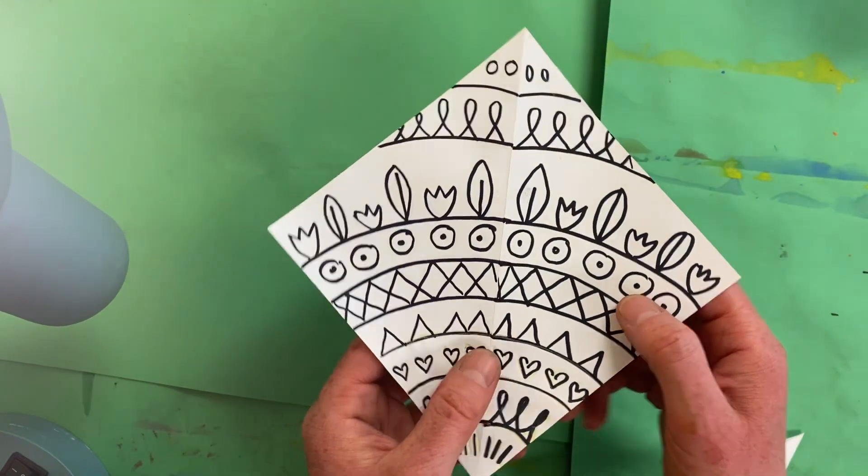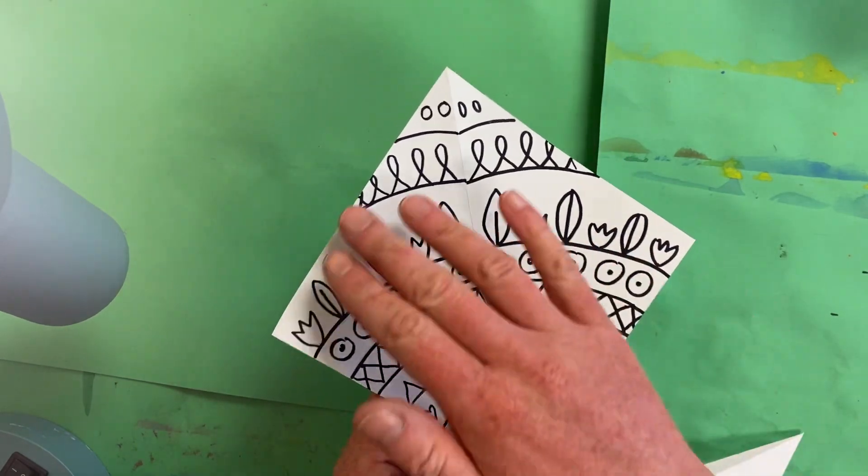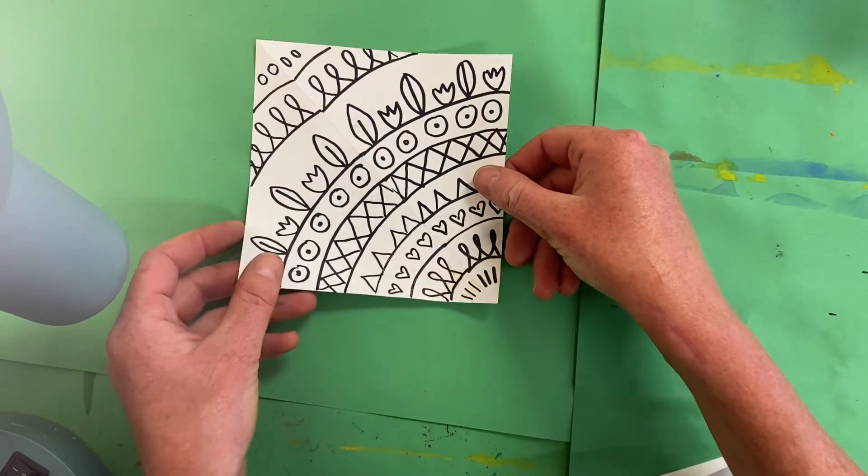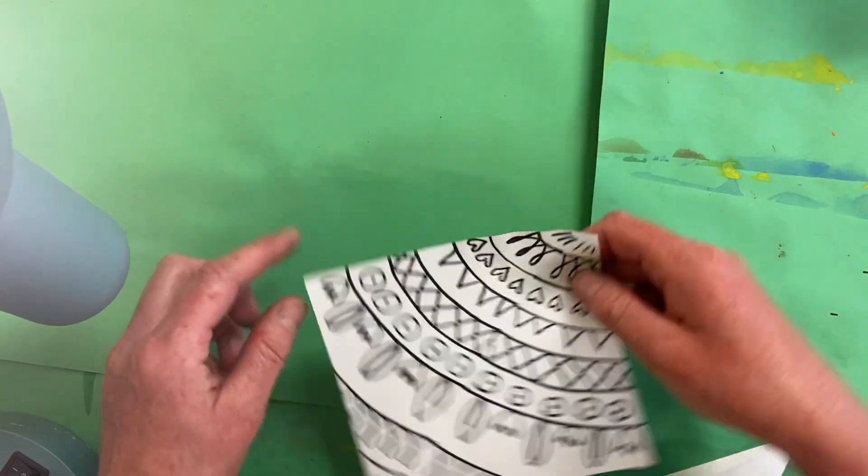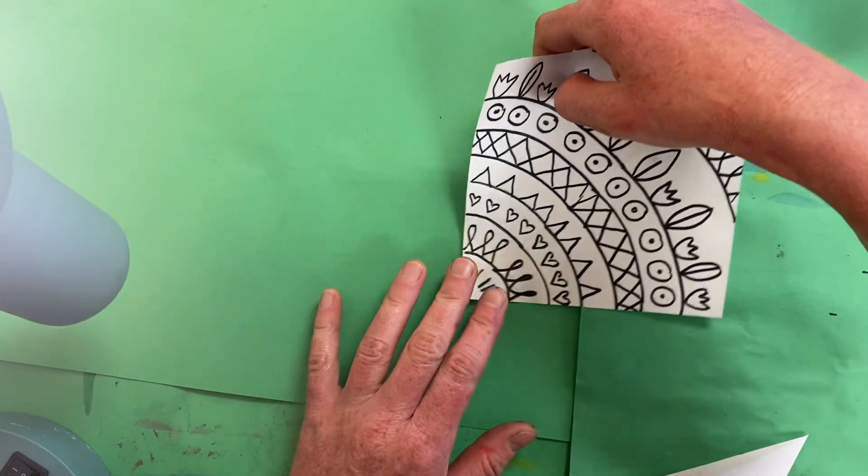But when you're done with that, you will simply be able to open this up and you will have a complete design filling your square. And that will allow us from there to print our designs, creating rotational symmetry.